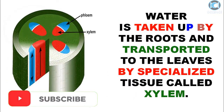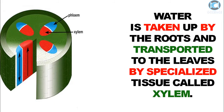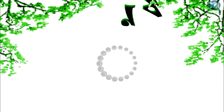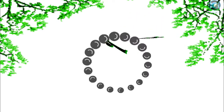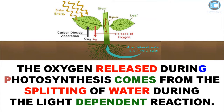Water is taken up by the roots and transported to the leaves by specialized tissue called xylem. The oxygen released during photosynthesis comes from the splitting of water during the light-dependent reaction.